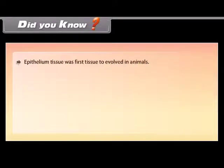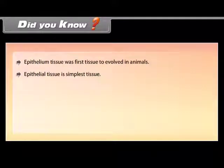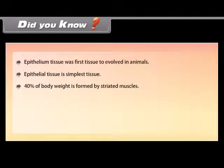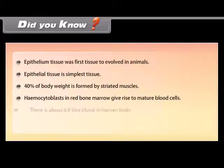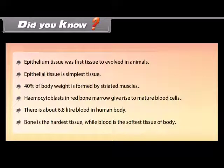Did you know? Epithelial tissue was the first tissue to evolve in animals and is the simplest tissue. 40% of body weight is formed by striated muscles. Hemocytoblasts in red bone marrow give rise to mature blood cells. There is about 6.8 liters of blood in the human body. Bone is the hardest tissue, while blood is the softest tissue of the body.